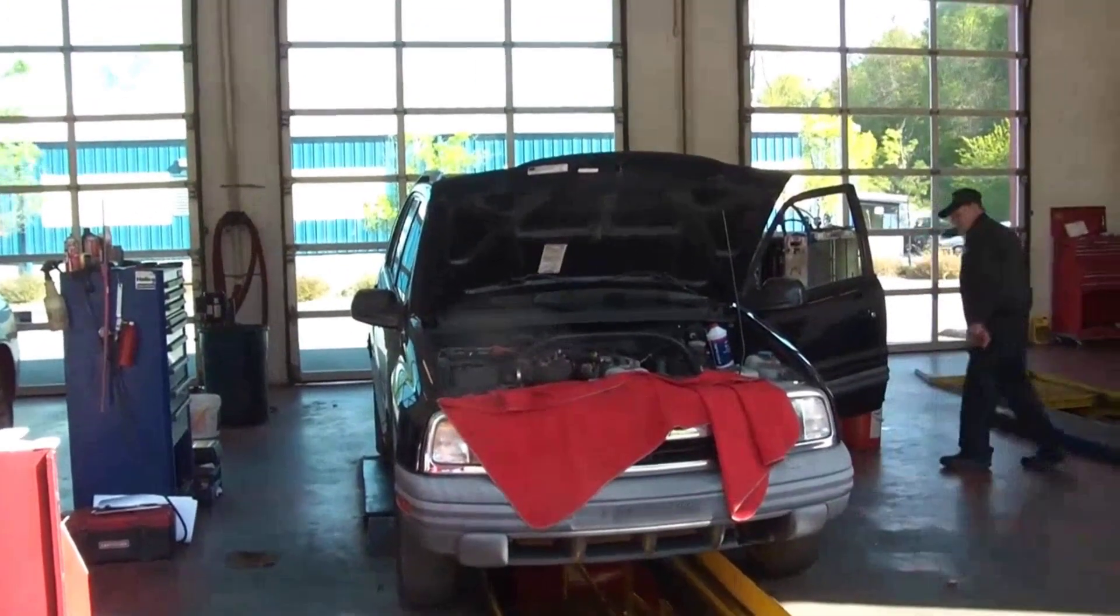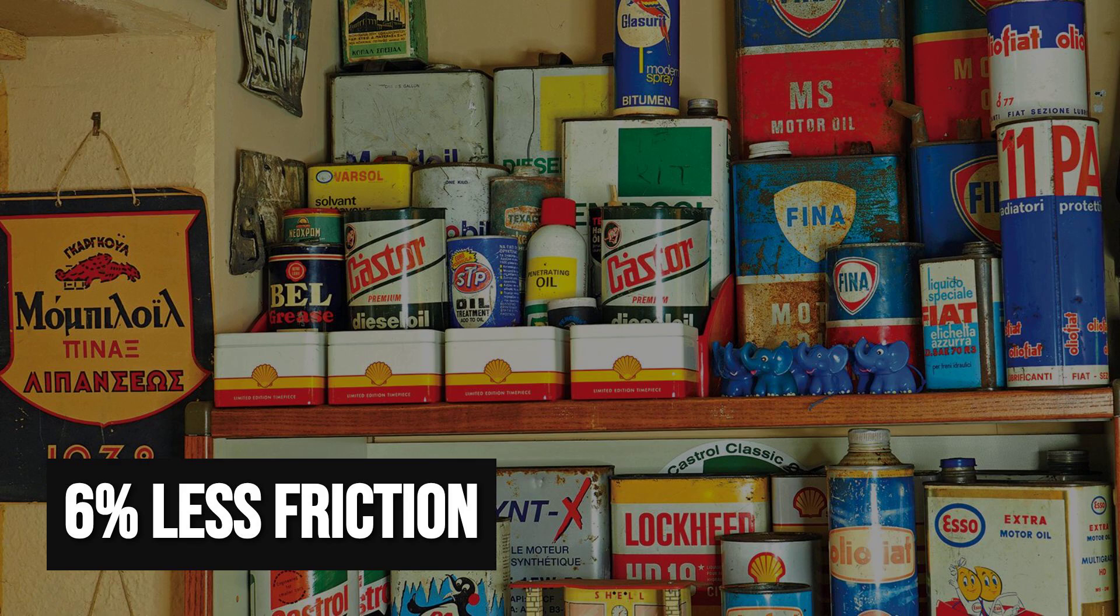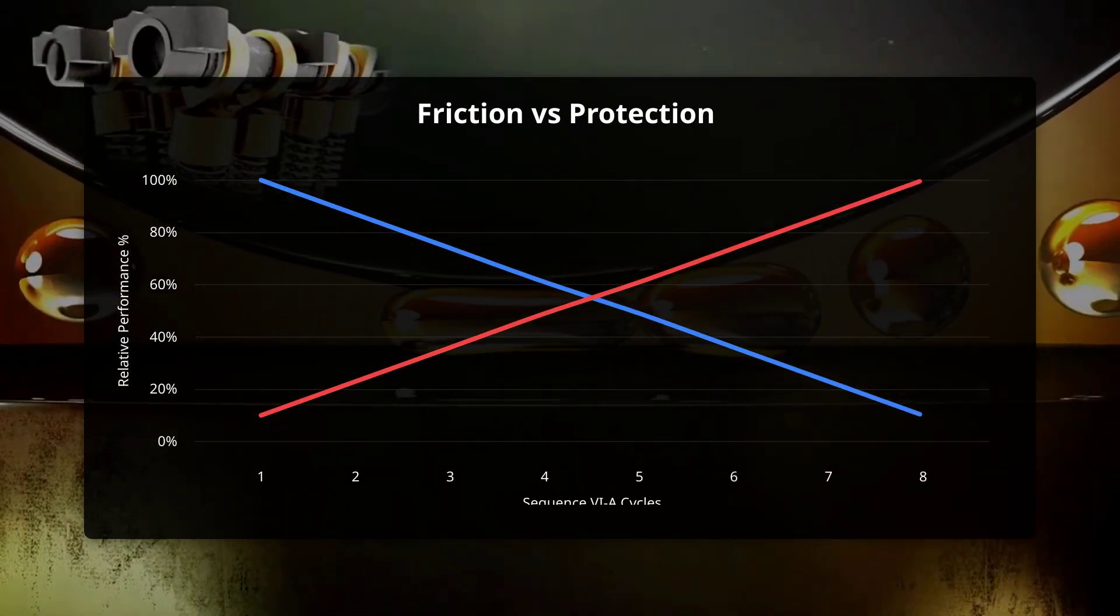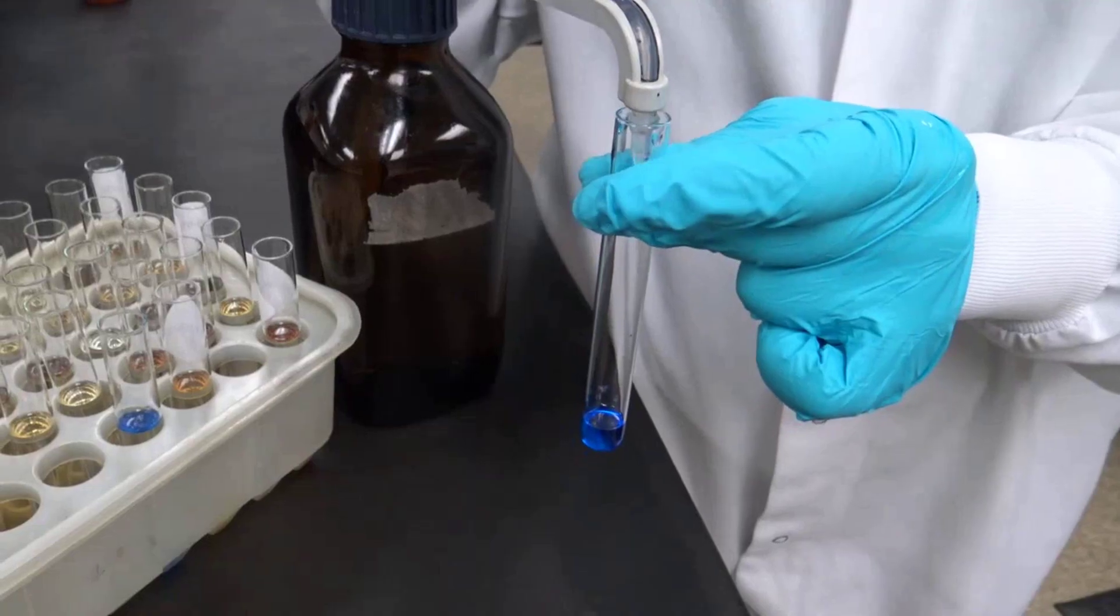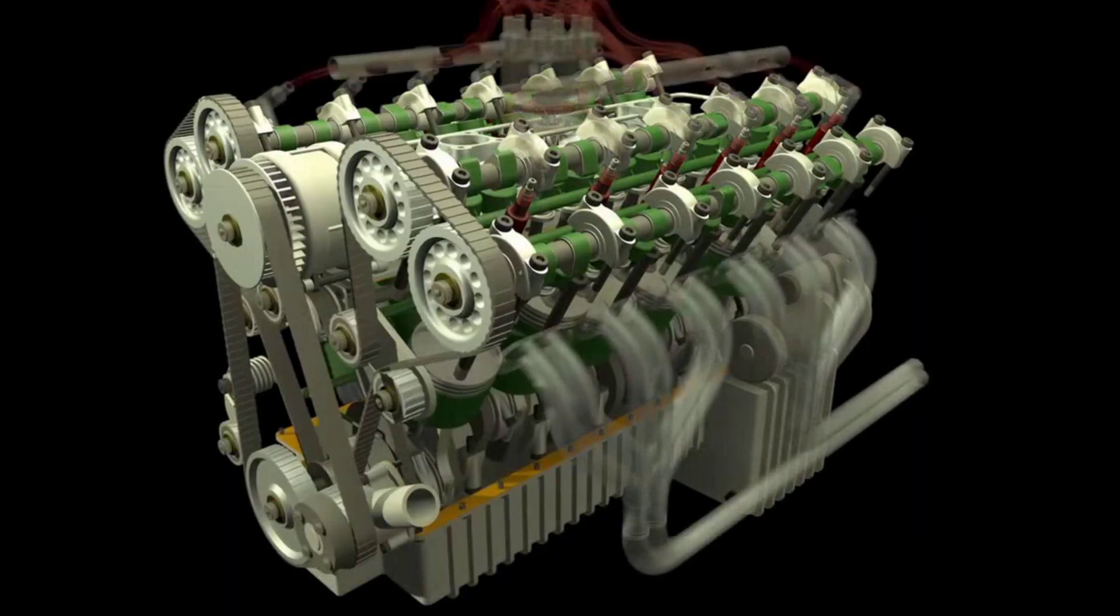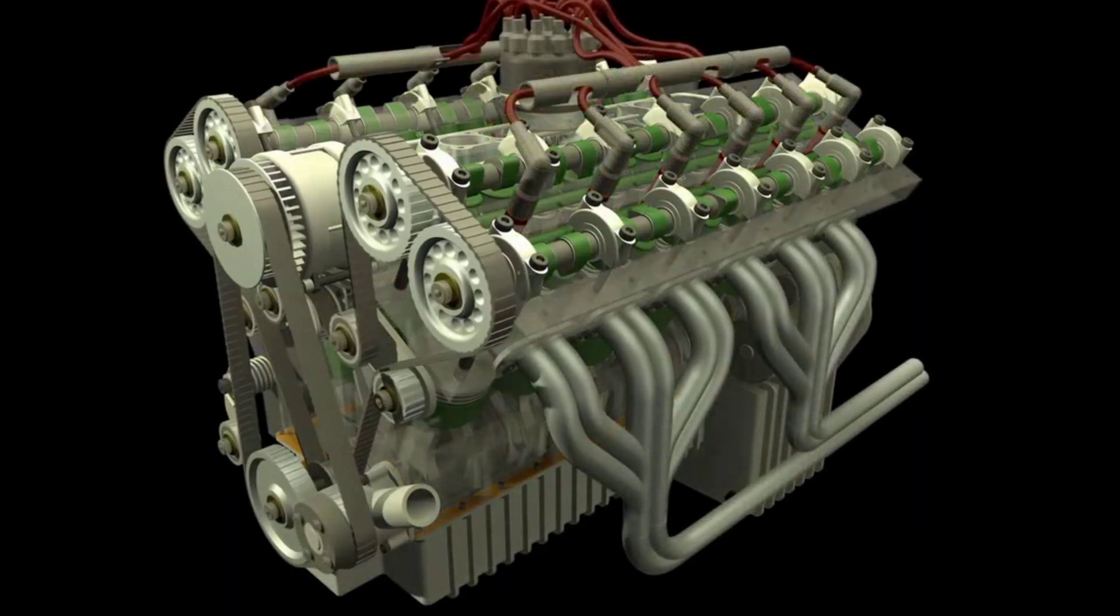This performance challenges the old belief that thicker oil always means better protection. Instead, the lab data show that a well-designed 5W-30 can actually lower friction and improve efficiency, as long as the chemistry is right.